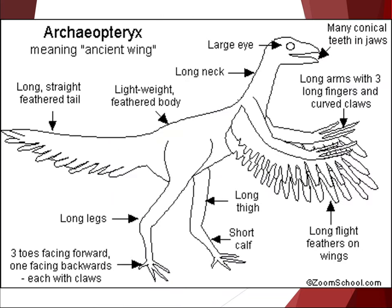There is increasing evidence in the fossil record that birds evolved from some small carnivorous dinosaurs, specifically the theropods. Tyrannosaurus rex belonged to this group of dinosaurs. This dinosaur-bird connection was first suggested after the discovery of a transitional fossil — meaning it had the characteristics of both reptiles and birds at the same time.